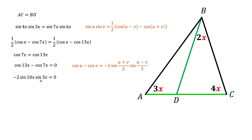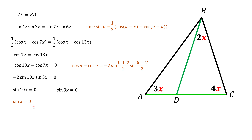This means at least one of those terms must be zero: either sin of 10x equals zero, or sin of 3x equals zero. We are essentially solving sin z equals zero. The solutions are z equals 0°, 180°, 360°, and so on — every multiple of 180° — and also negative multiples. In general, the solution is z equals 180° times n, where n is any integer.